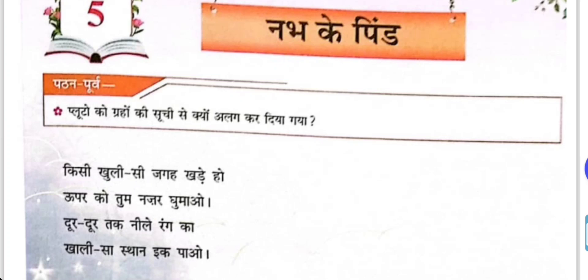Pluto has been removed from the planet list because Pluto is made up of gaseous substance and doesn't have a proper orbit. So earlier, Pluto was considered a planet, but now it is classified as a dwarf planet and removed. So we only have eight planets. The planets in Hindi are: Buddh, Shukra, Prithvi, Mangal, Brahaspati, Shani, Arun, Varun.